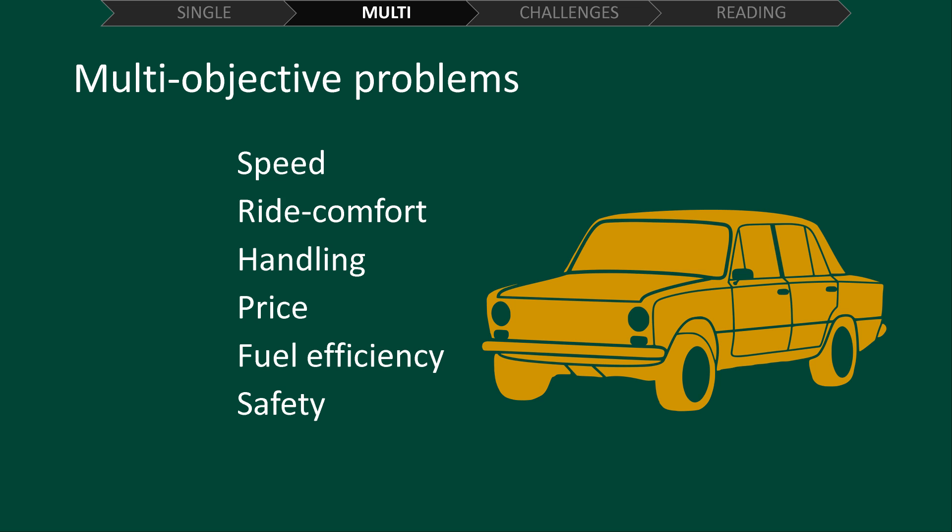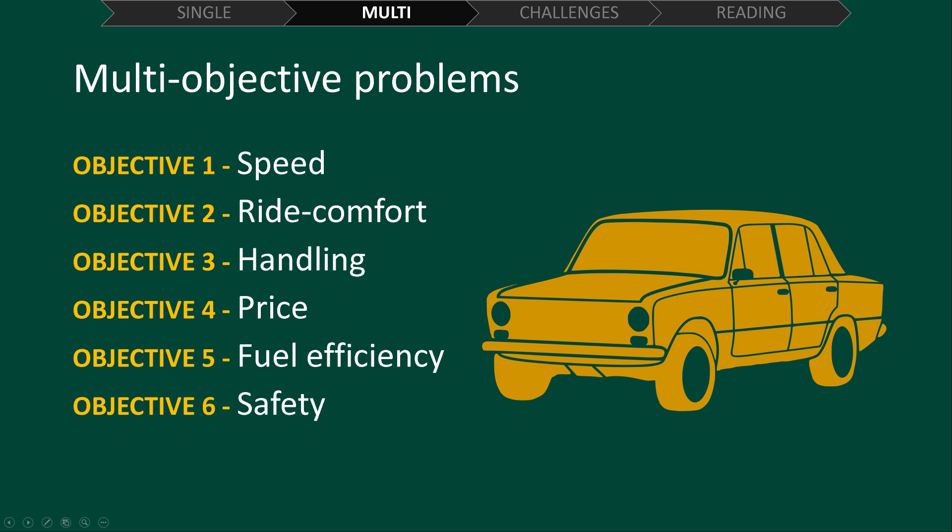We would refer to this as a six objective problem because there are six objectives that we wish to optimize at the same time. As part of our problem definition, we can refer to each objective by a number, giving us objective one through to objective six. Here you can see these have been labeled on screen.